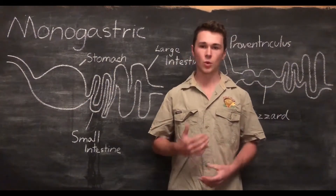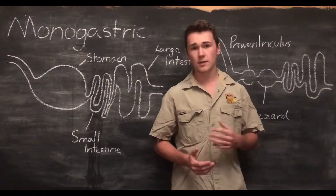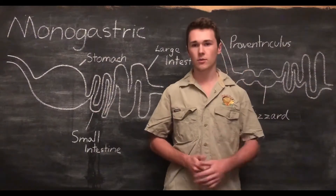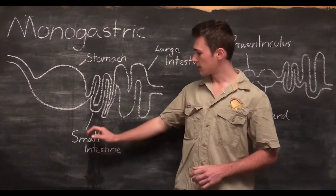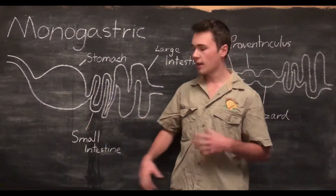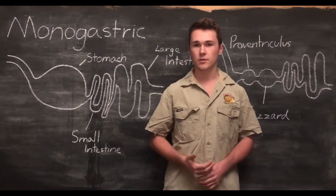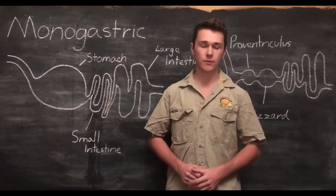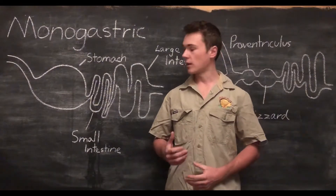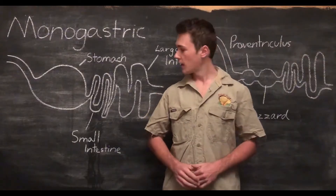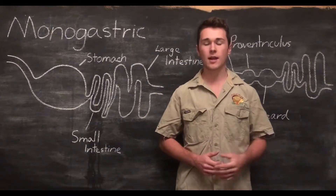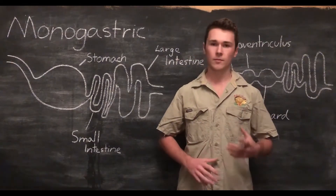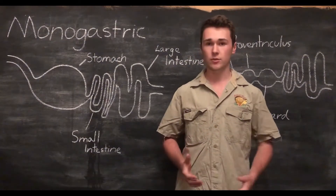The function of the small intestines is to absorb nutrients. It does this by diffusing the nutrients from the small intestines through the membrane and into the bloodstream, where they are transported across the body for use. At the beginning of the small intestines, pancreatic fluid from the pancreas and bile from the liver are added to assist with further breakdown. The small intestines have a very large surface area to volume ratio, meaning maximum diffusion can occur, increasing the efficiency of the overall system.